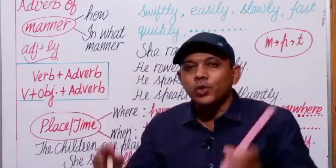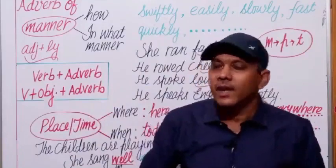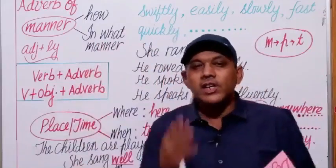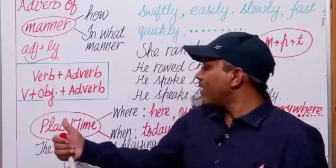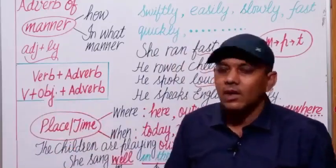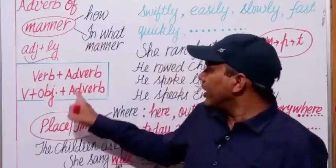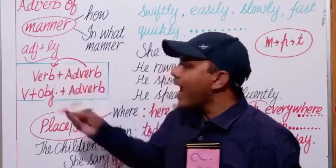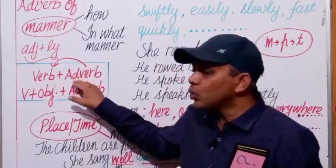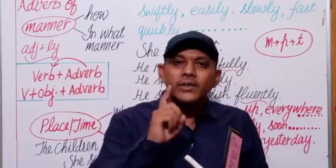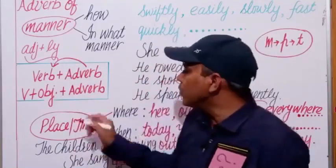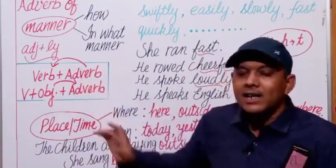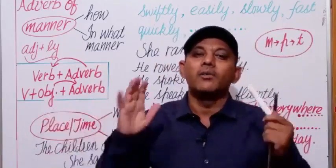Where do we use adverbs of manner in sentences? In the case of adverb of manner, we use the adverb after the verb, because it describes the action — the verb. But if there is an object of the verb in the sentence, then we use the adverb after the object: verb → object → adverb. This formula tells us about the position of adverb of manner in different sentences.